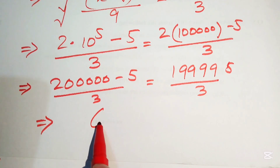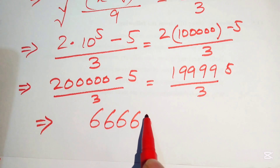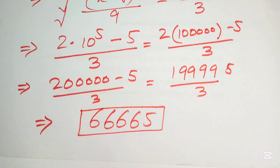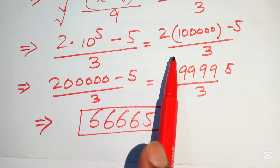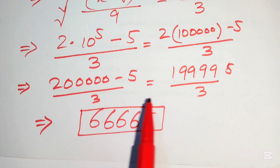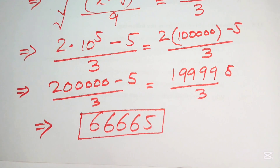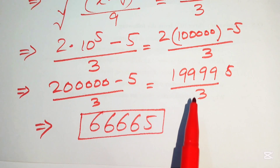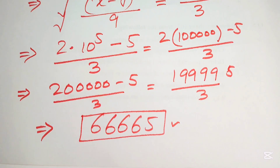Dividing 199,995 by 3 gives 66,665. This is the final simplified answer. You can verify this using the traditional subtraction or division method. Thank you for watching — please subscribe for more videos.